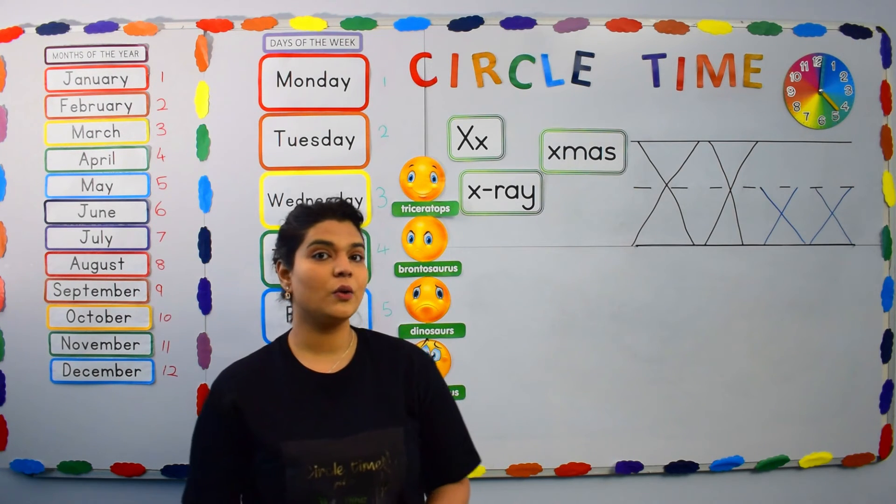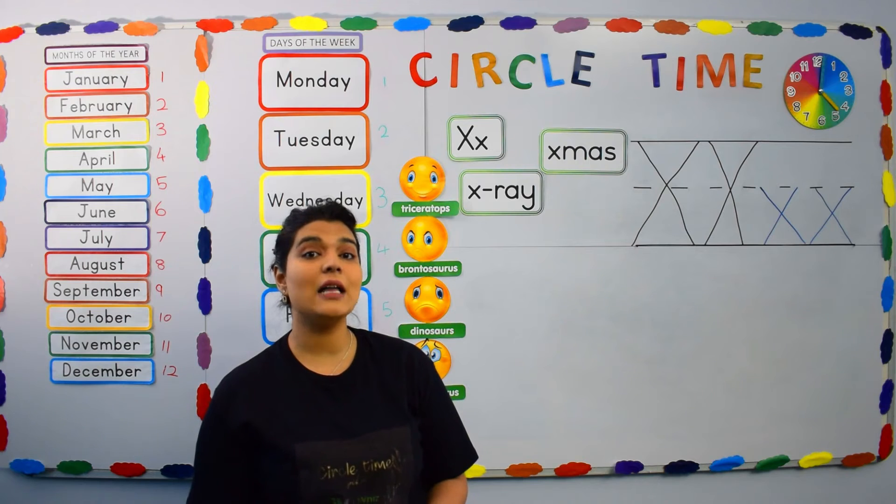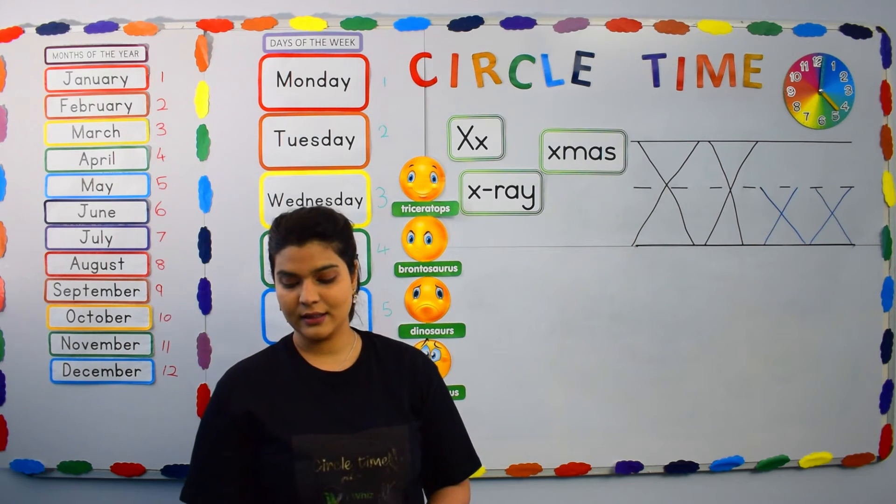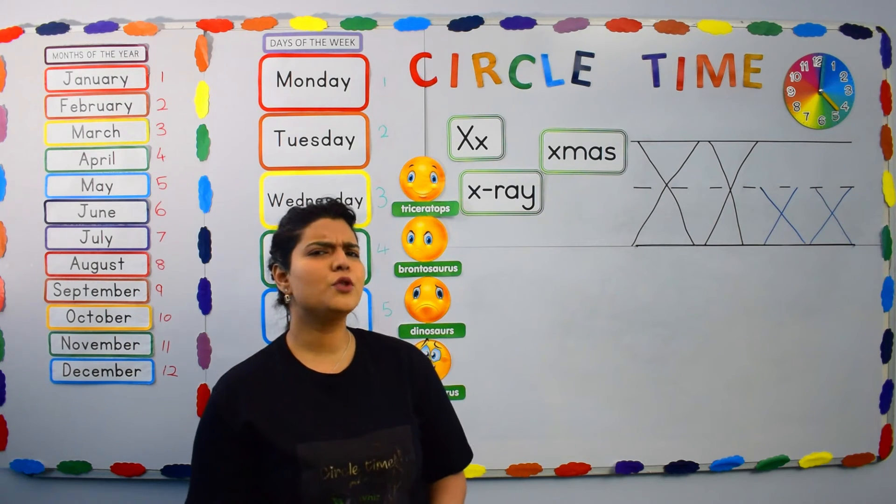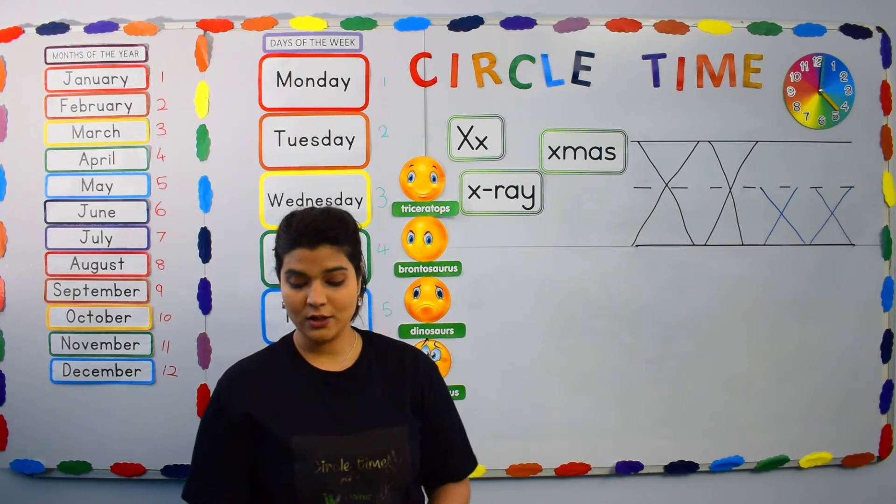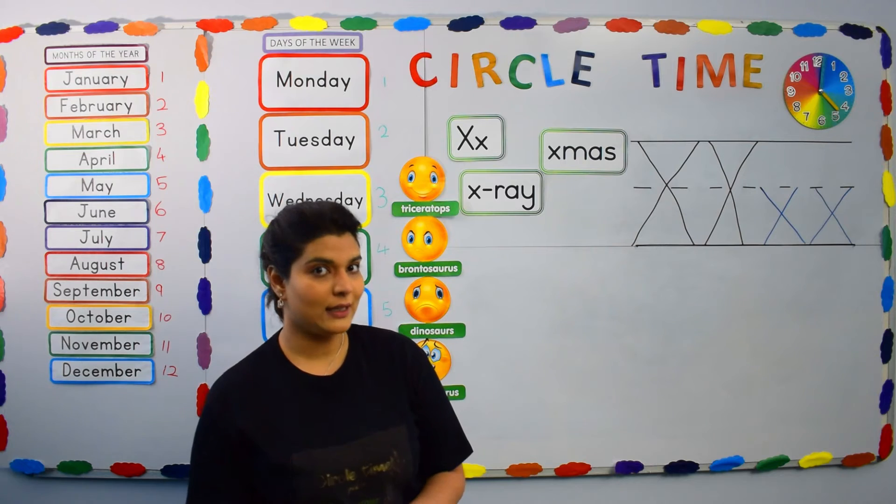Now, earlier on I told you that we're going to draw a xylophone using the letter X. Let's start with that. But how do we do this?